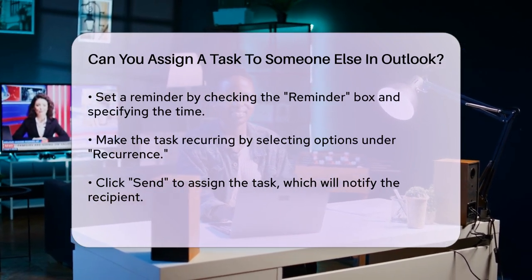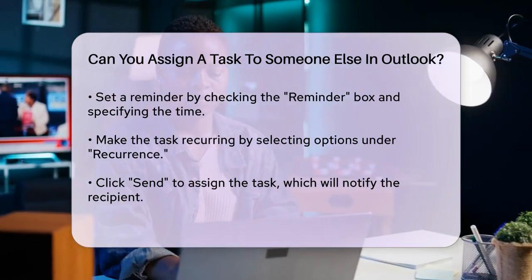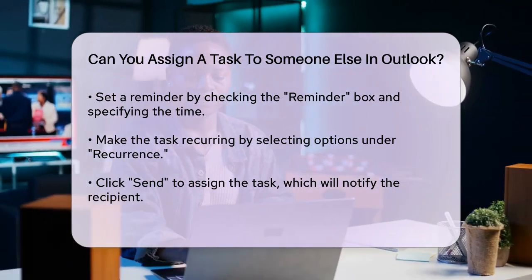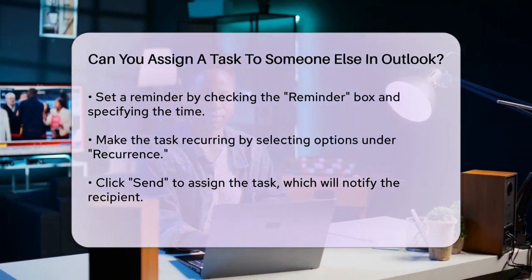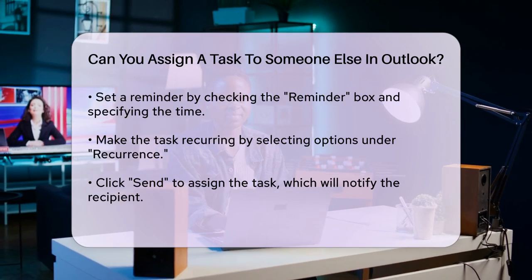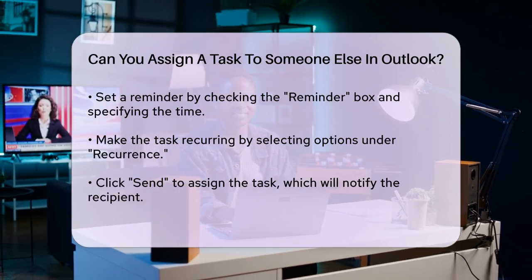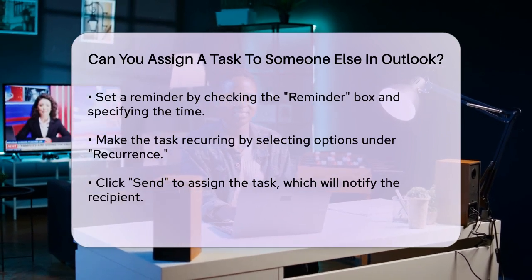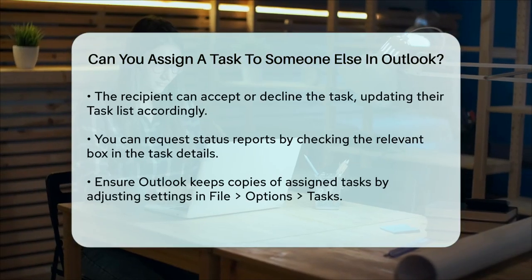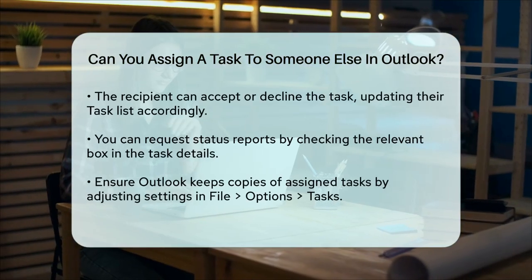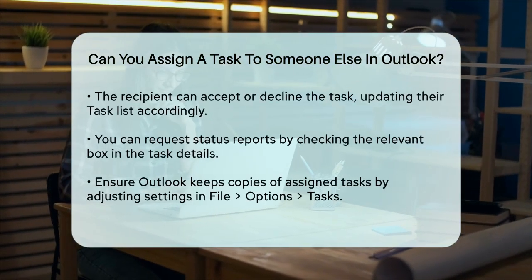Outlook also allows recipients to send status reports for assigned tasks. You can request these reports by checking the 'Send me a status report when this task is complete' box. This way, you'll receive updates on the task's progress and can review them using the Send complete box in the task details.